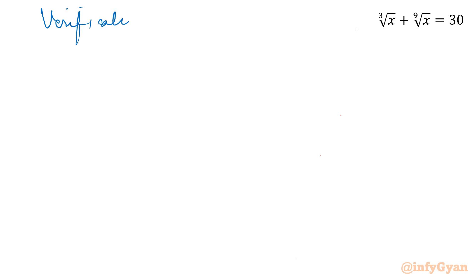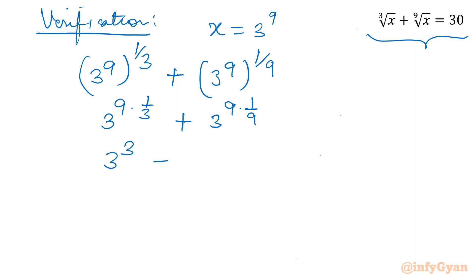Verification: x is 3 power 9. Let us put it there. 3 power 9 whole power 1/3 plus 3 power 9 whole power 1/9. This will give us 3 power 3 plus 3 power 1, or 3. This is 27 plus 3 which is equal to 30, equal to RHS. Hence verified.